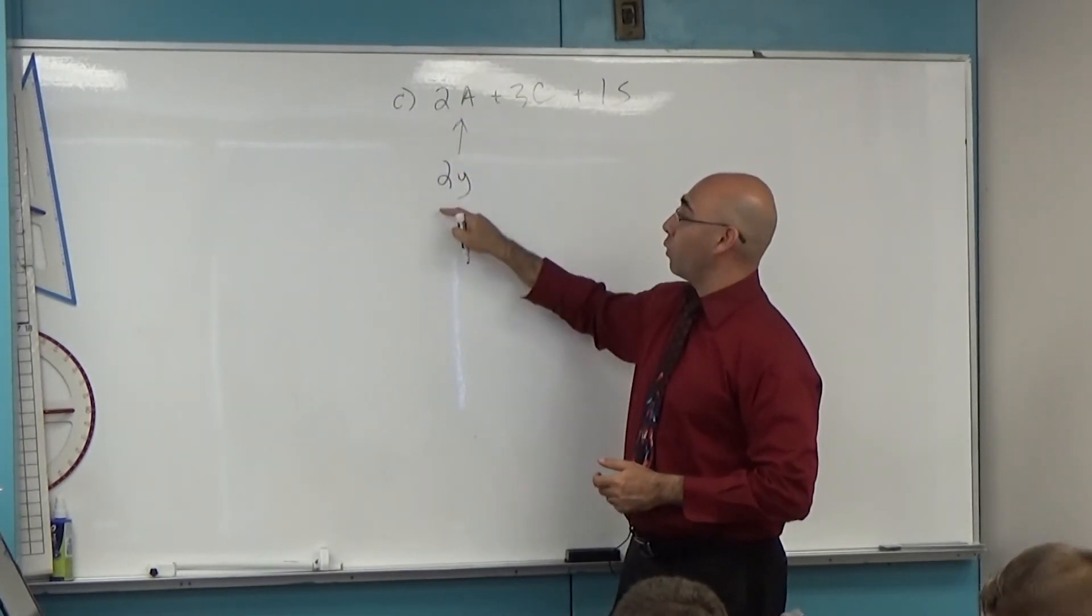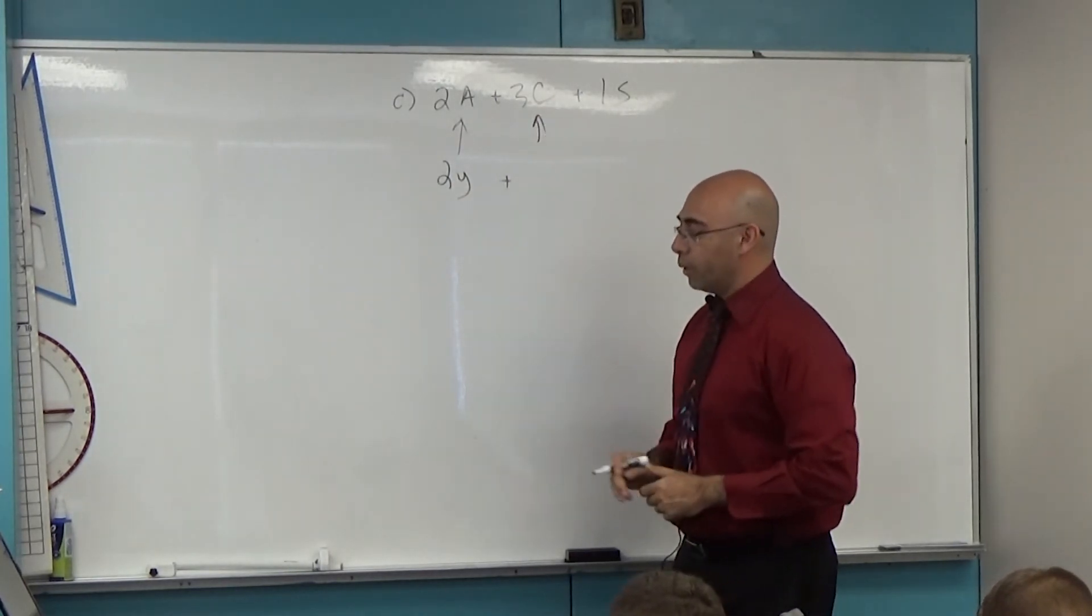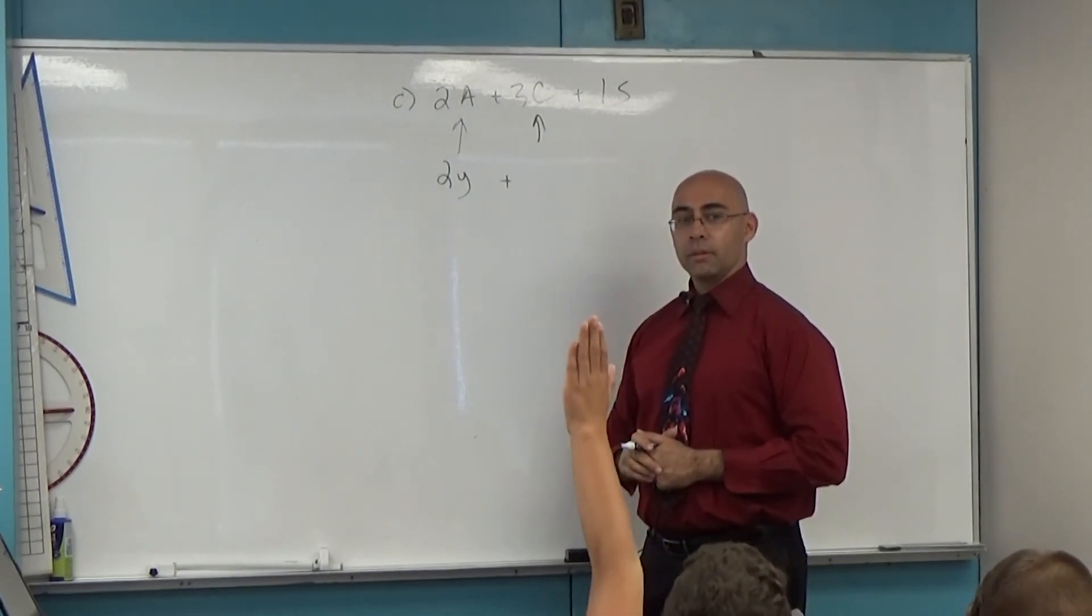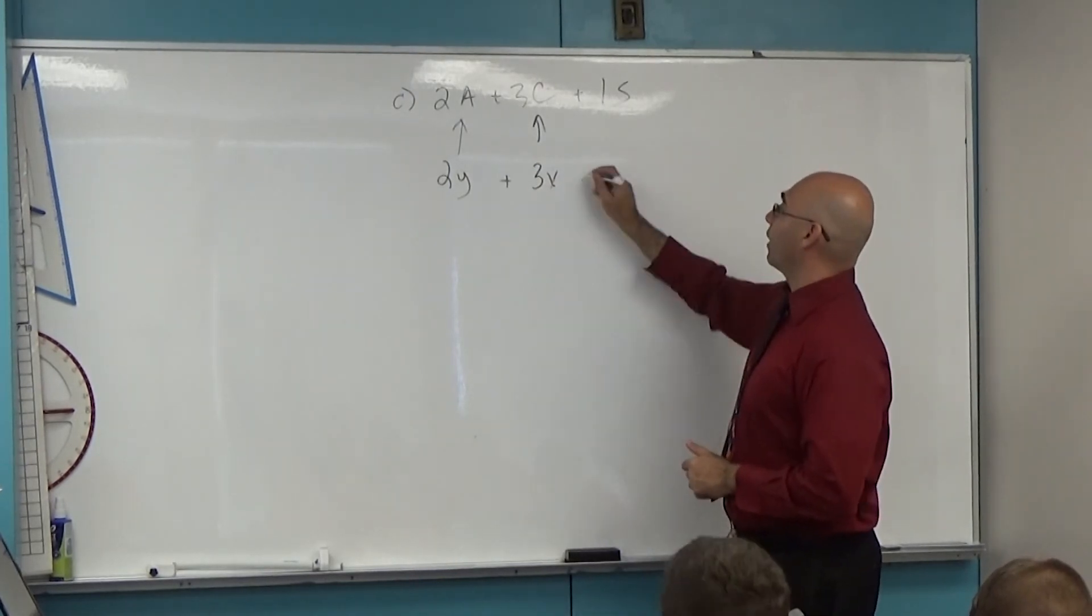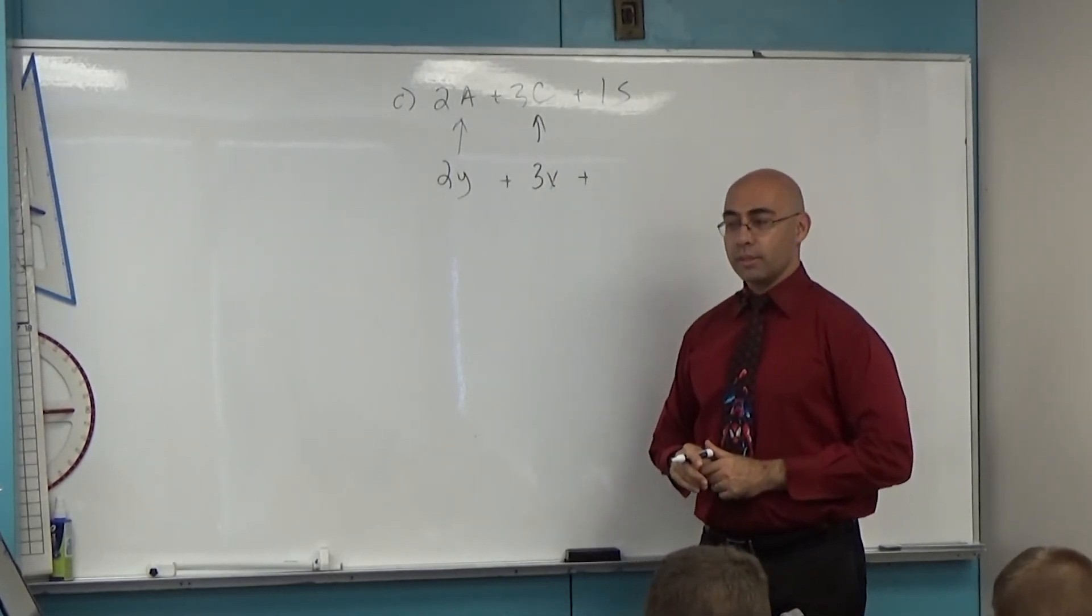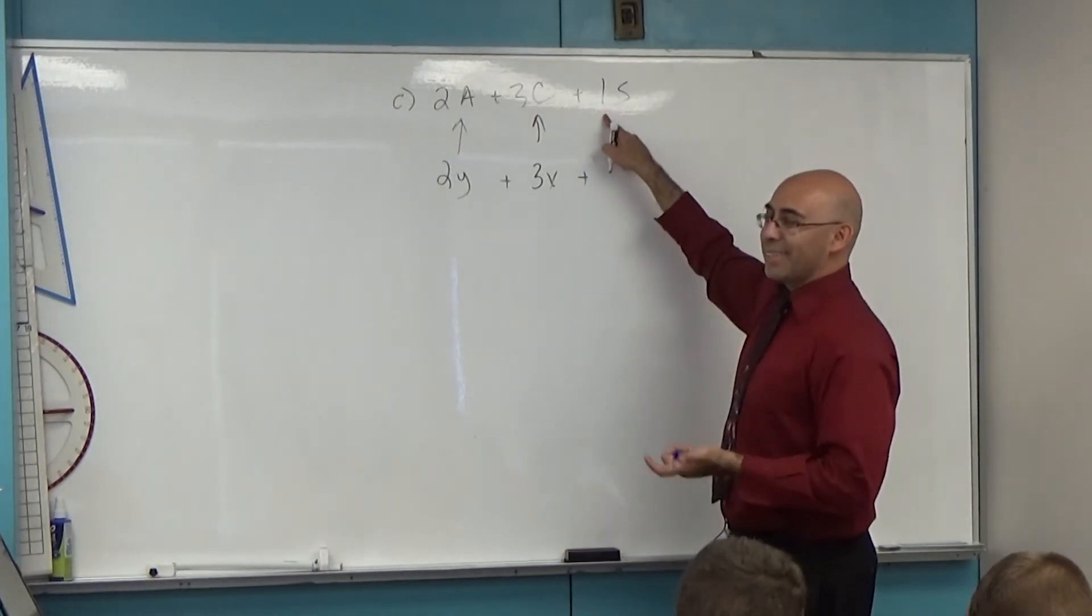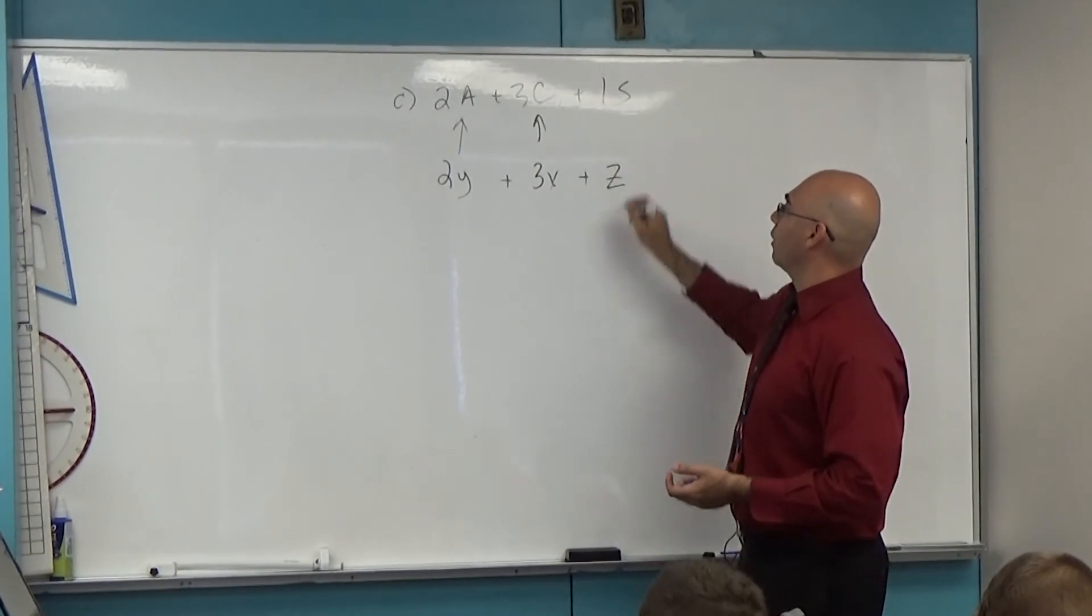I'll write two Ys. An adult is Y. I have two adults, so I have two Ys. What is the letter they use for children? Yes, so it'll be three X. Do they give me something for senior citizens? They do. What do they give you? A Z. And since there's only one Z, I don't have to put the one there, so I'll just put Z. So that's your answer for part C.